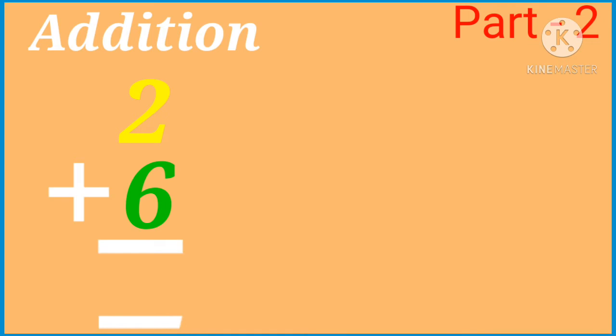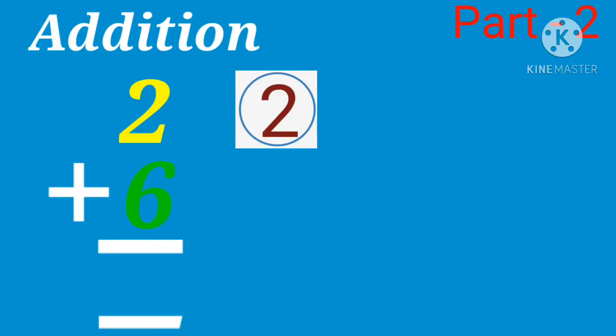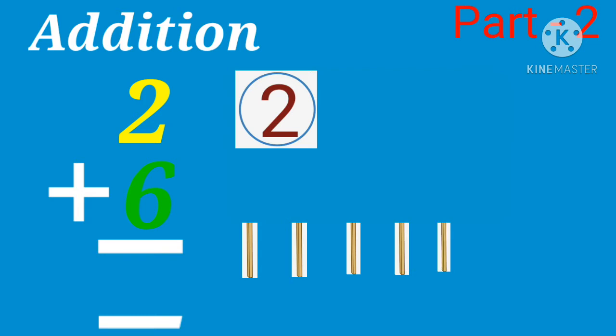Given number is 2, circle the number 2 like this. Downside number is 6, draw 6 bars like this. 1, 2, 3, 4, 5, 6.